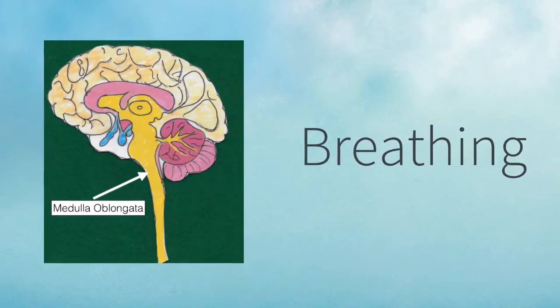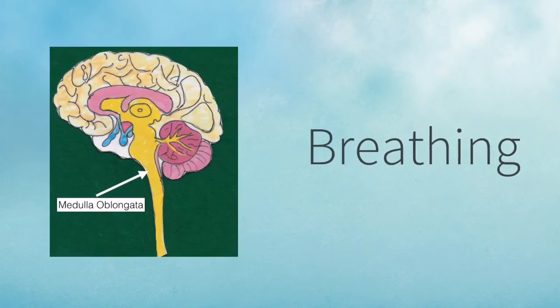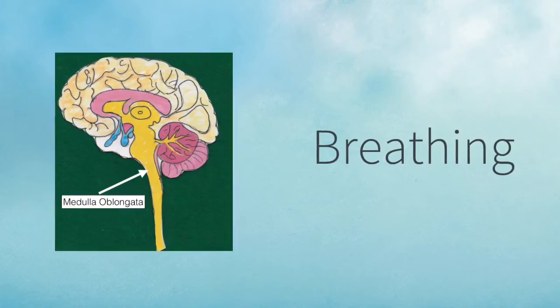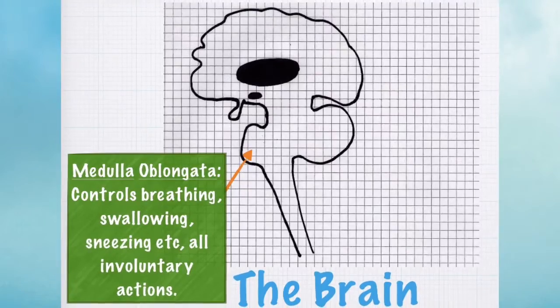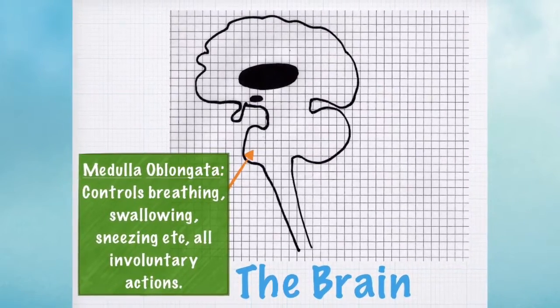The next part of the brain is the medulla oblongata, and you'll remember this from the chapter on breathing, because it controls breathing. It also controls swallowing, sneezing, and other involuntary actions.